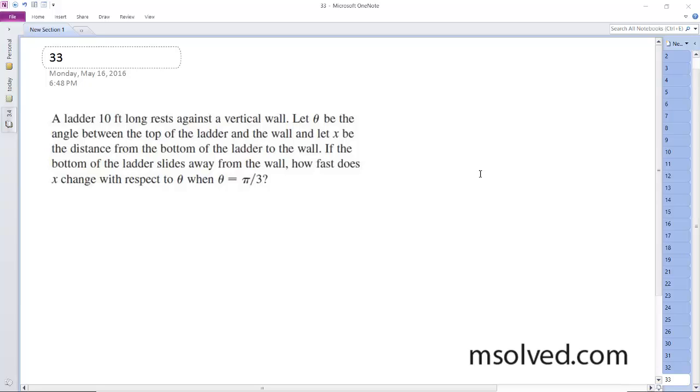So we've got a ladder that rests against a vertical wall. And let theta be the angle between the top of the ladder and the wall. So I'm going to go ahead and draw this diagram here. So here's the wall. Here's theta. Here's x. And then here's the ladder.